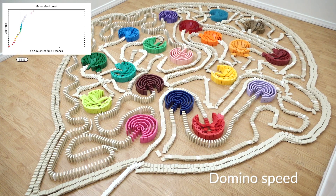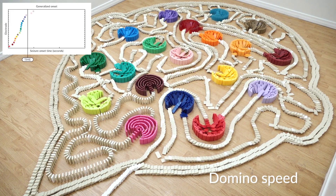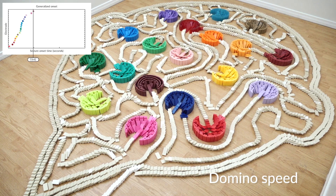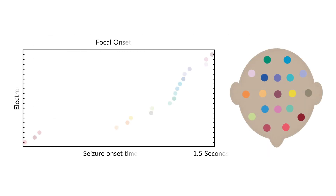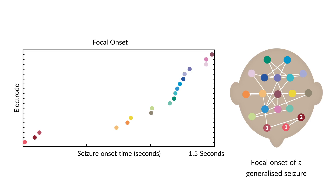People with generalised epilepsy can have several seizures a day. Each seizure could have a different pattern of spread across the brain. This seizure was recorded from the same person just half an hour later, and we can see that there are three electrodes that detect the seizure first. If we pull out the start points from each electrode and map them onto the head, we can see that the first three are at the front of the head. This is called focal onset of a generalised seizure.